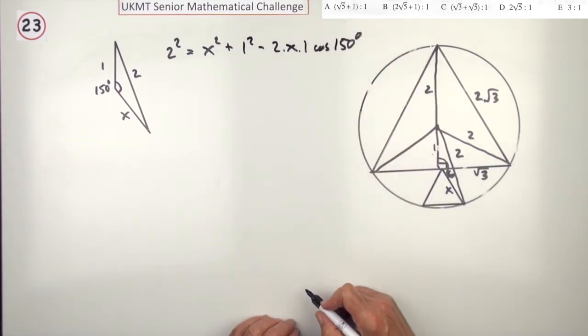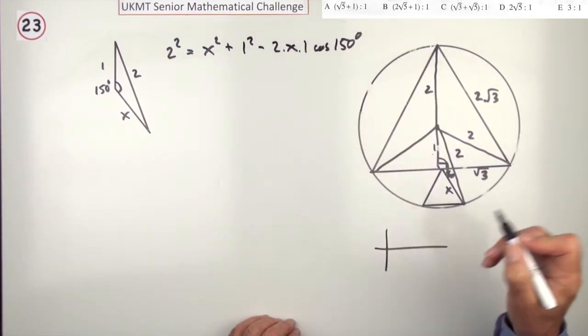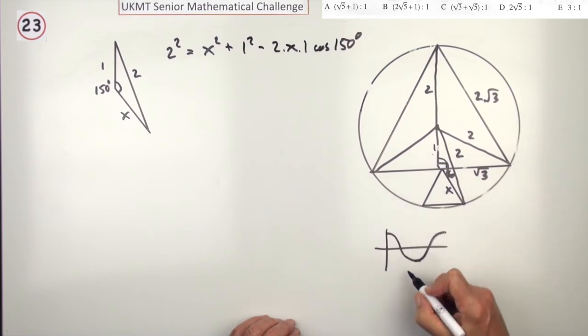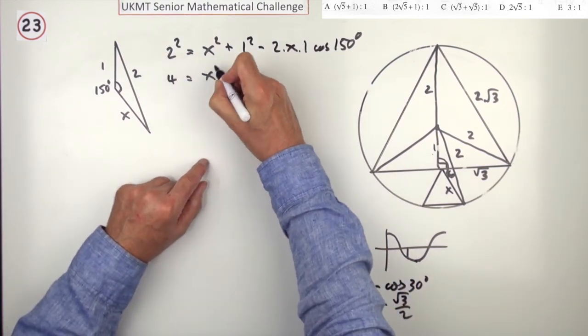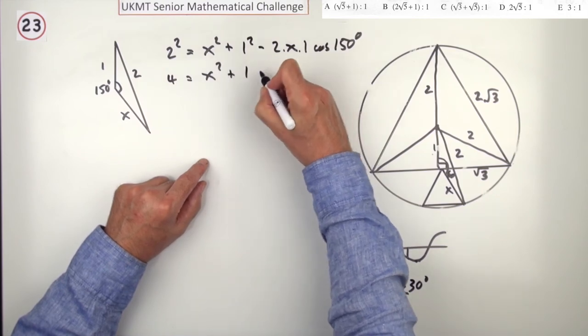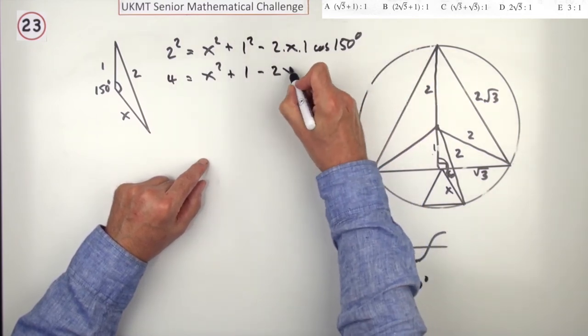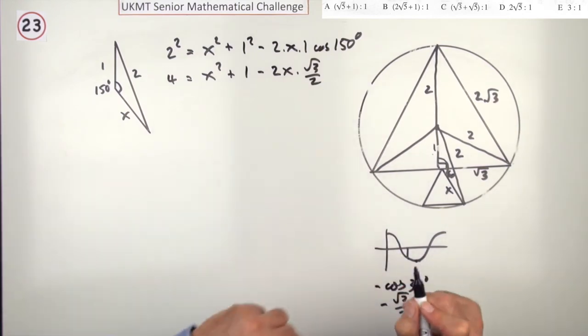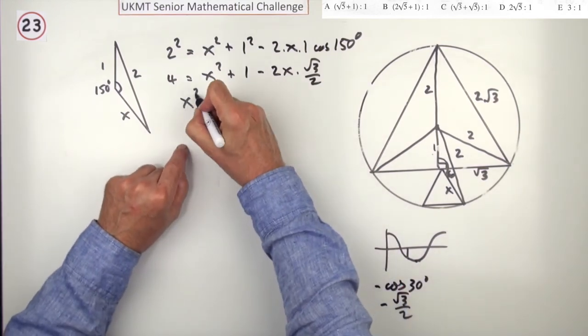What's the cosine of 150? Whichever way you do it, the cosine of 150 is going to be negative, because it's beyond 90, and it's 30 back from there, same as the negative of the cosine of 30. The cosine of 30 isn't a half, because sine 30's got that, so that must be root 3 upon 2. So that's 4 equals x squared plus 1 minus 2x times root 3 upon 2.